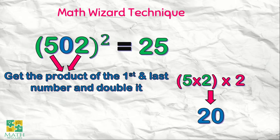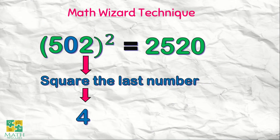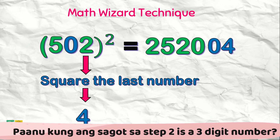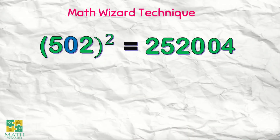The last step is to square the last number. The square of two is four, and we write it as zero-four. Therefore, the square of 502 is 252,004. Let's recap the steps: first, square the first number to get twenty-five. Second, multiply the first and last number — five times two is ten — then double it to get twenty. And the last step, square the last number two to get zero-four.